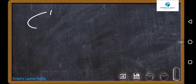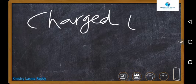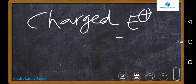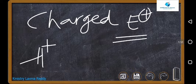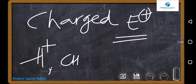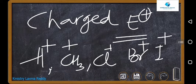First we will go with charged electrophiles. Charged electrophiles are those having positive charges, like H+. H+ is one good example, along with CH3+, Cl+, Br+, and I+. All these are good examples of charged electrophiles.